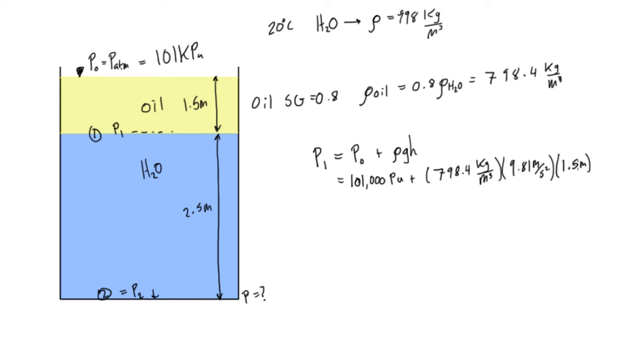And again, if you multiply all these together, you're going to get units of pascals. So, we get 101,000 pascals plus, when you multiply all of these together, we will get about 11,748 pascals. And then when we add these together, we just get 112,748 pascals.